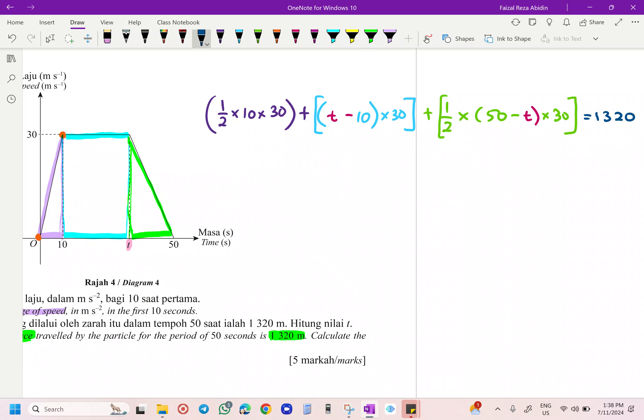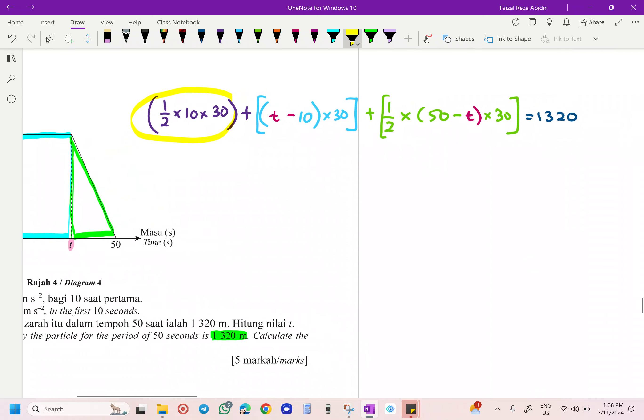5 for me, the first one there. 5 times 30, 150. Yes, 150 bring straight away to the other side. Minus 1,320 minus 150 over here, 1,170. This one, I am going to simplify this one.